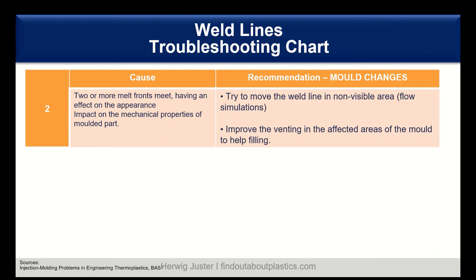Now regarding mold changes, we can try to move the weld line into a non-visible area — for example, by moving the gate and, if possible, by changing the wall thickness to alter the path of the polymer melt in the cavity. As a consequence, the position of the weld line can be influenced. You may not be able to remove it entirely, but you can move it to a non-visible area.